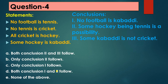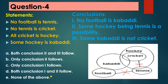Question 4: Statements — no football is tennis, no tennis is cricket, all cricket is hockey, some hockey is kabaddi. In the Venn diagram, football and tennis are separate with a cross symbol; tennis and cricket are also separate with a cross symbol; cricket is inside hockey; and kabaddi overlaps with some part of hockey, showing some hockey is kabaddi.